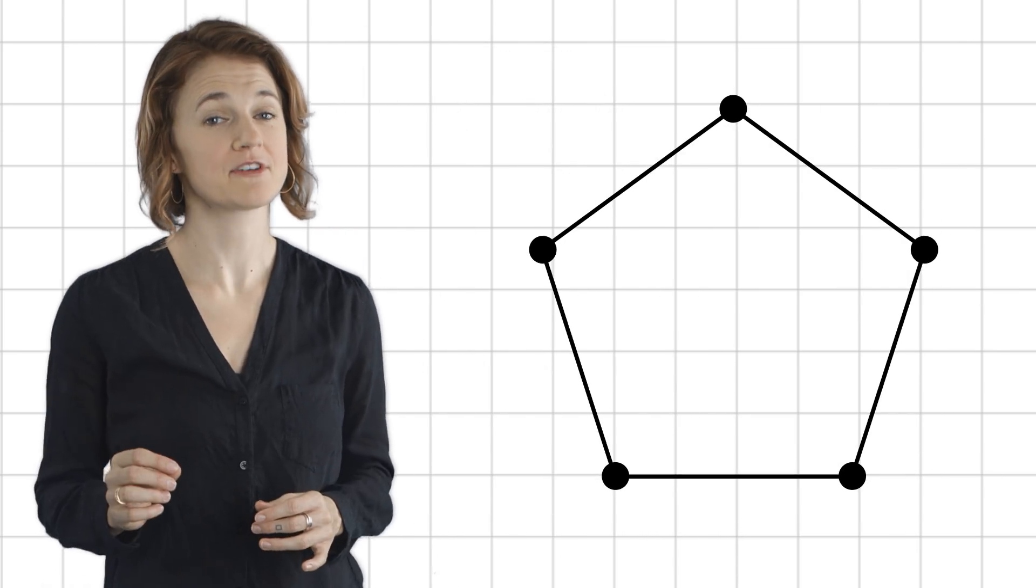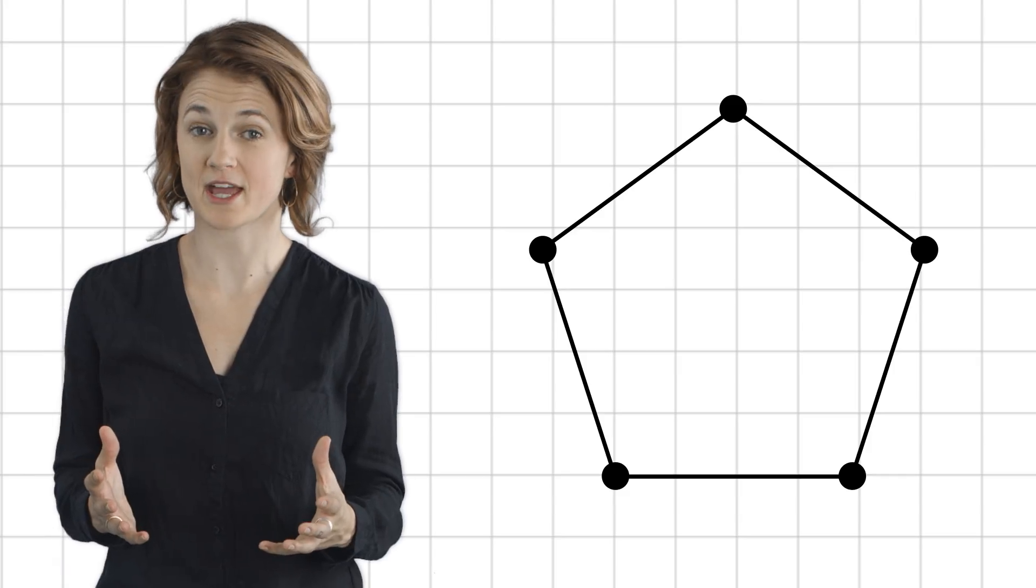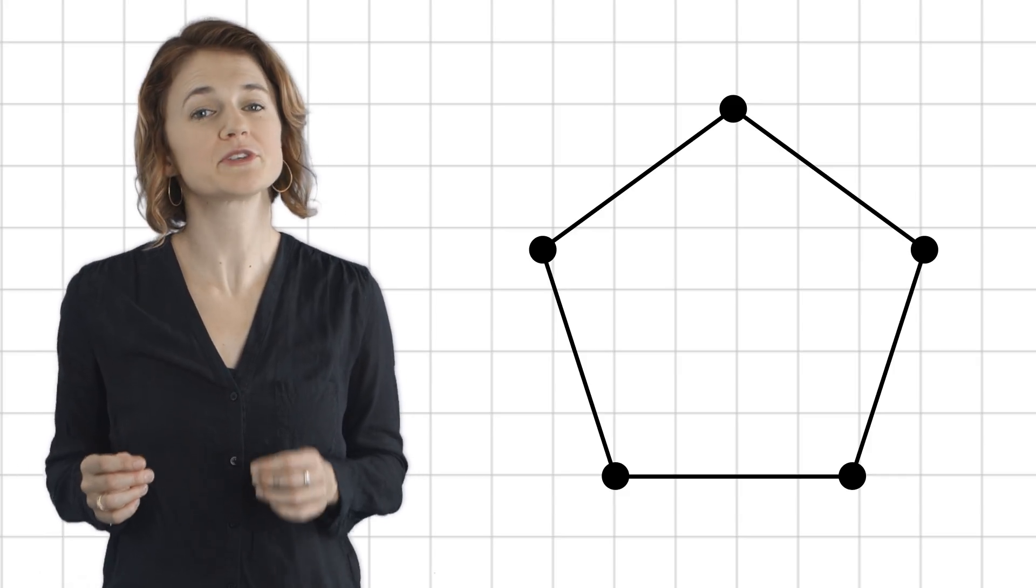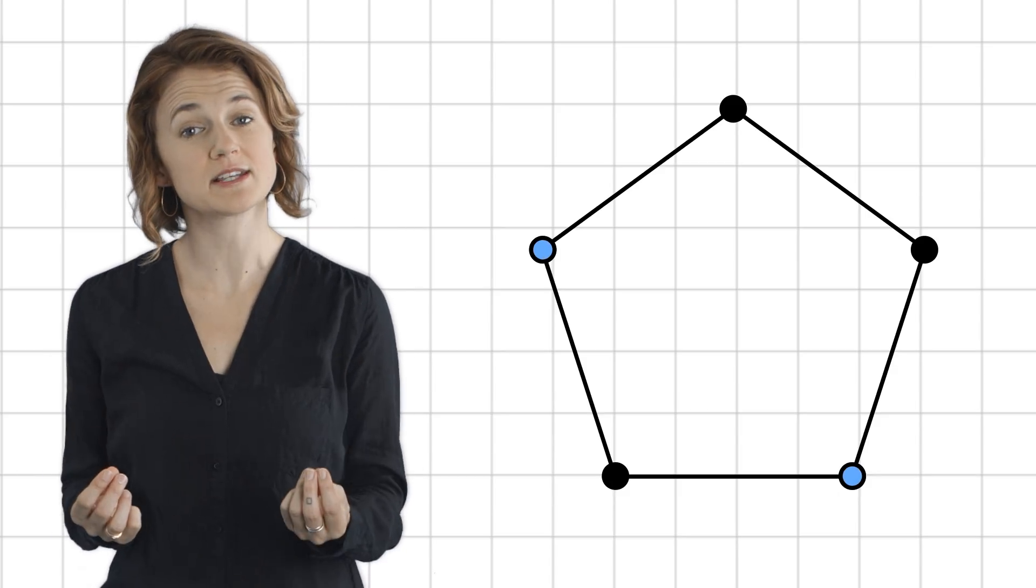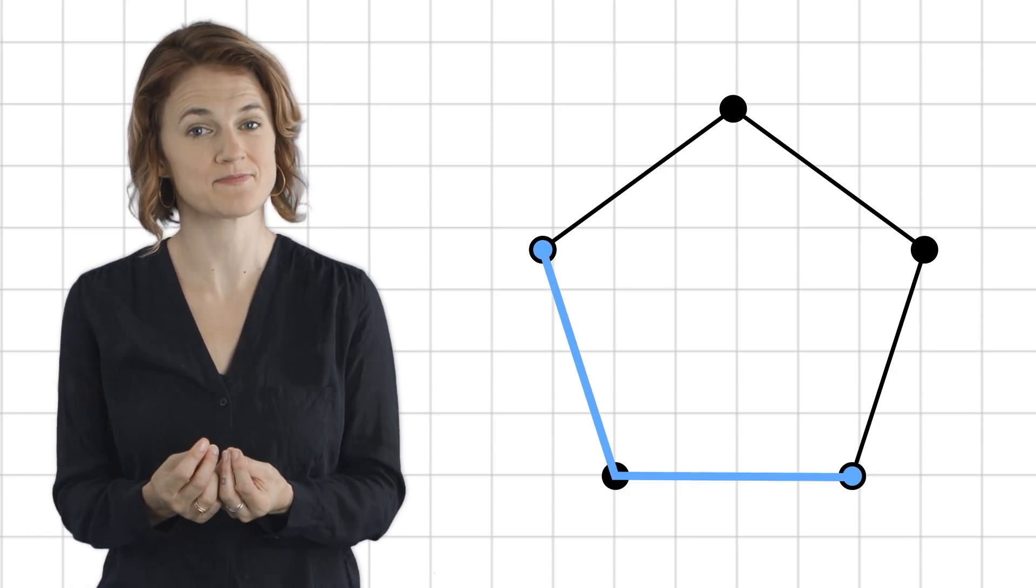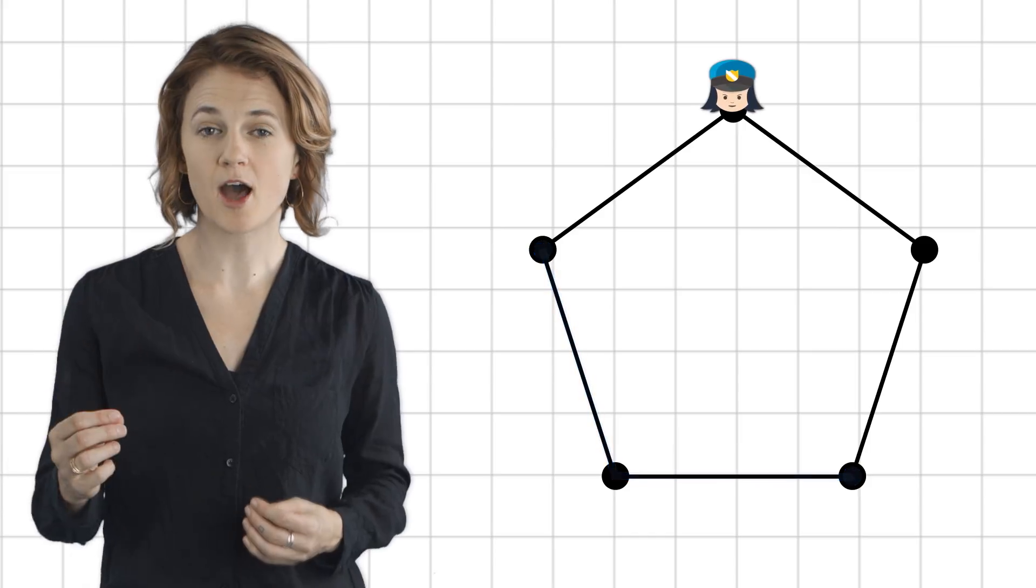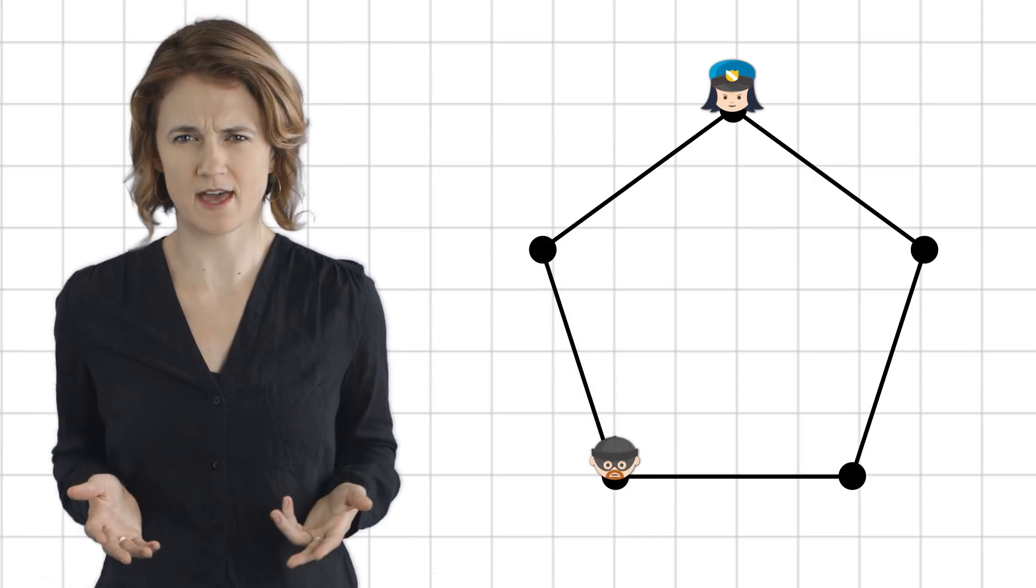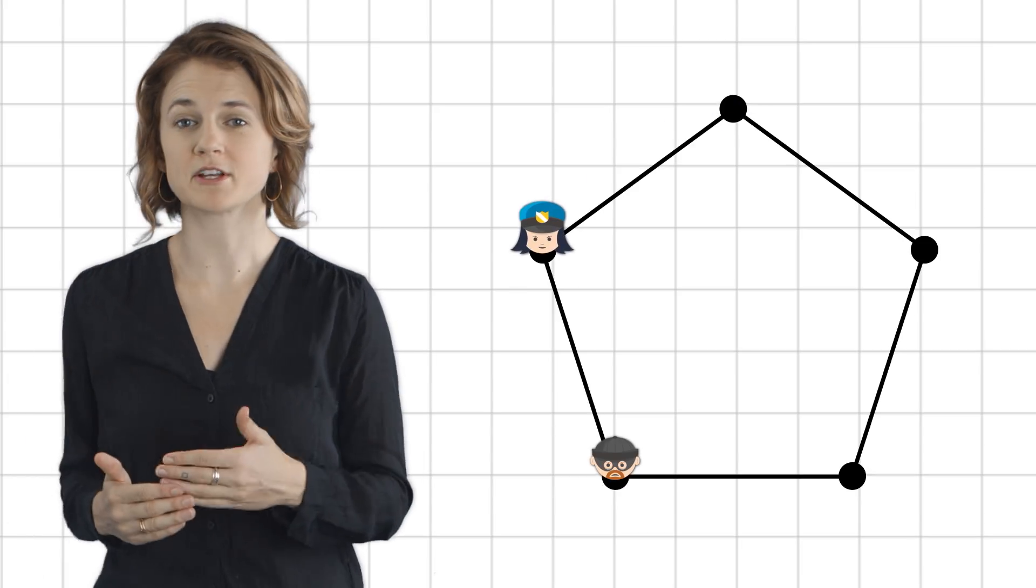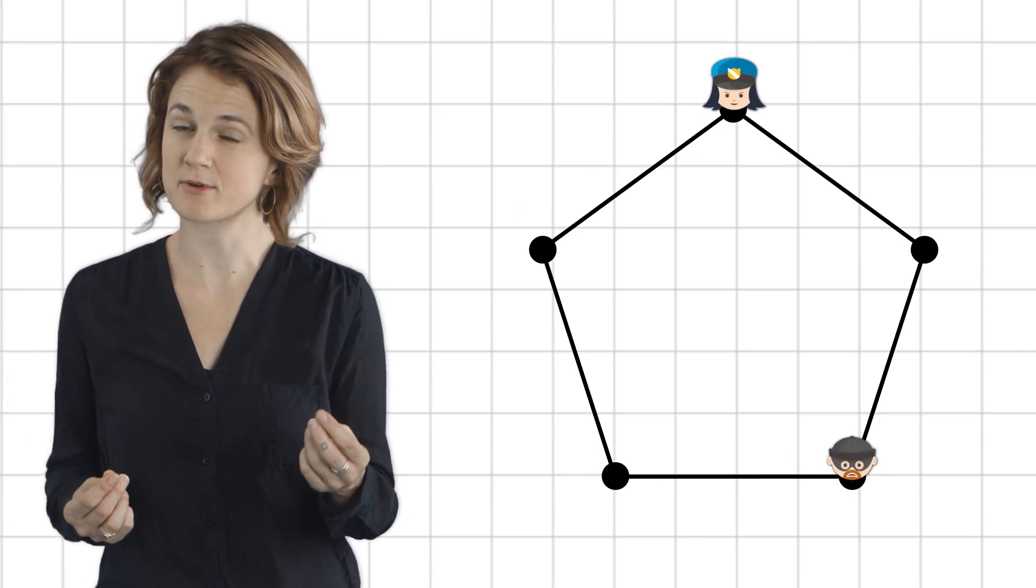Cops and Robbers is played on a graph, a collection of vertices connected by edges. Throughout the episode, we'll assume that the graph is finite and connected, meaning that any two vertices are joined by a path of edges. The game begins by placing a cop and a robber each on a single vertex. They alternate moving along the edges from a vertex to a neighboring vertex.